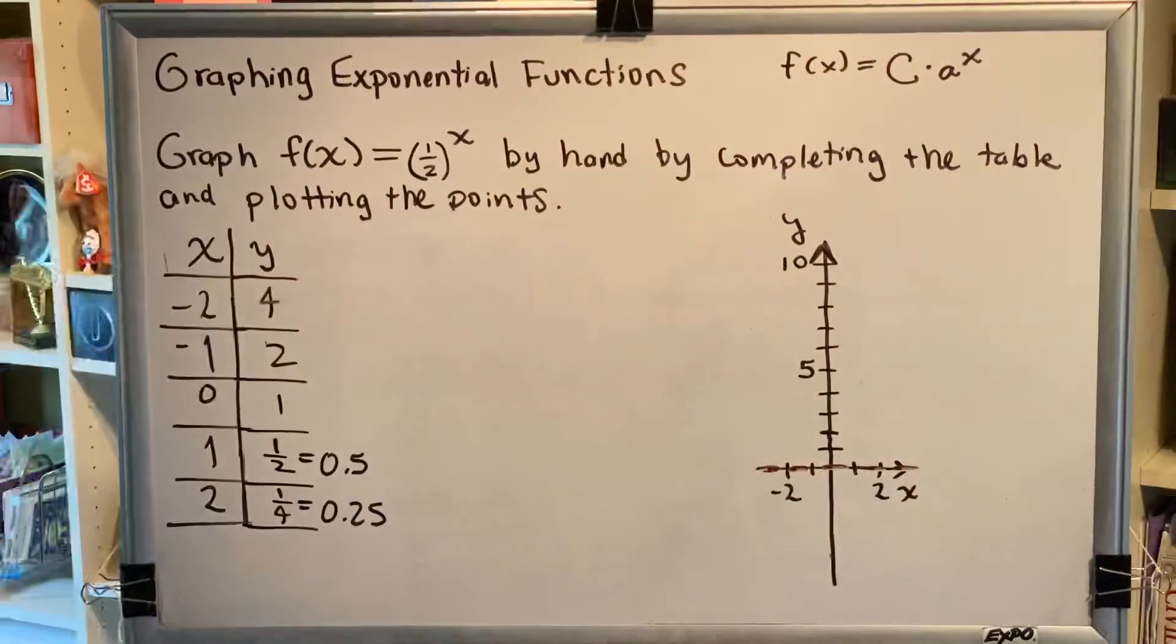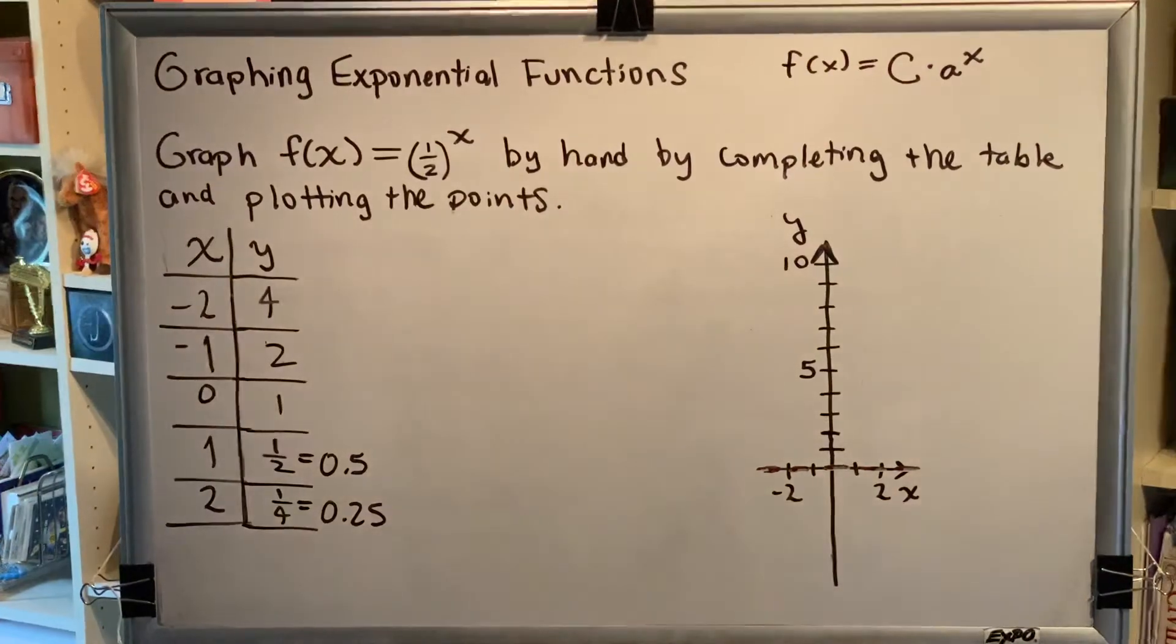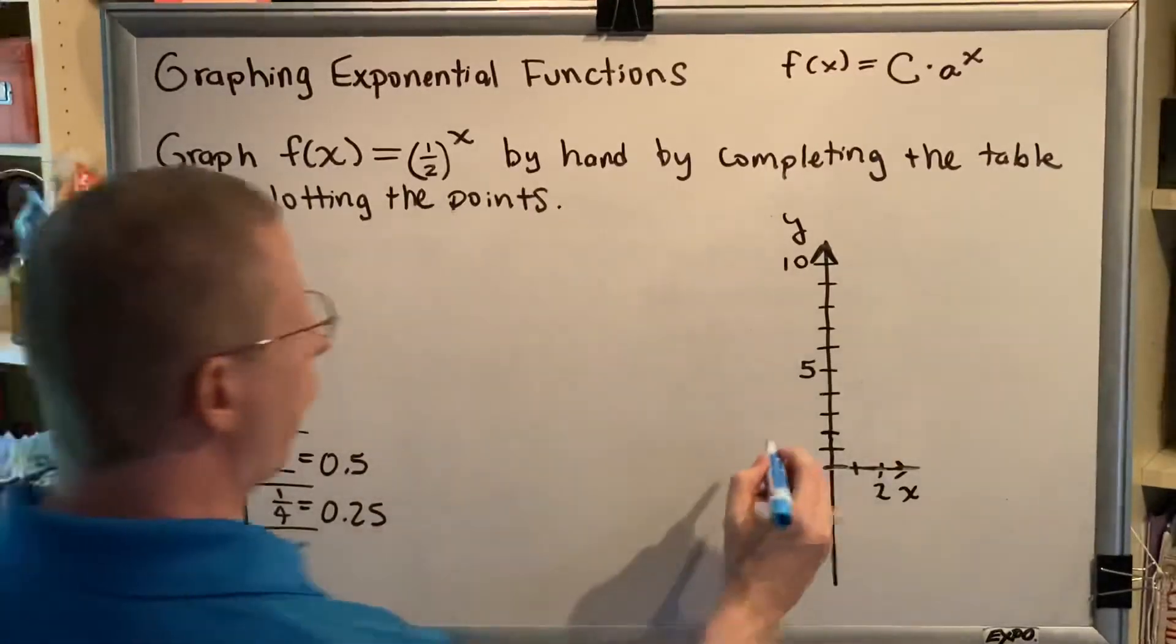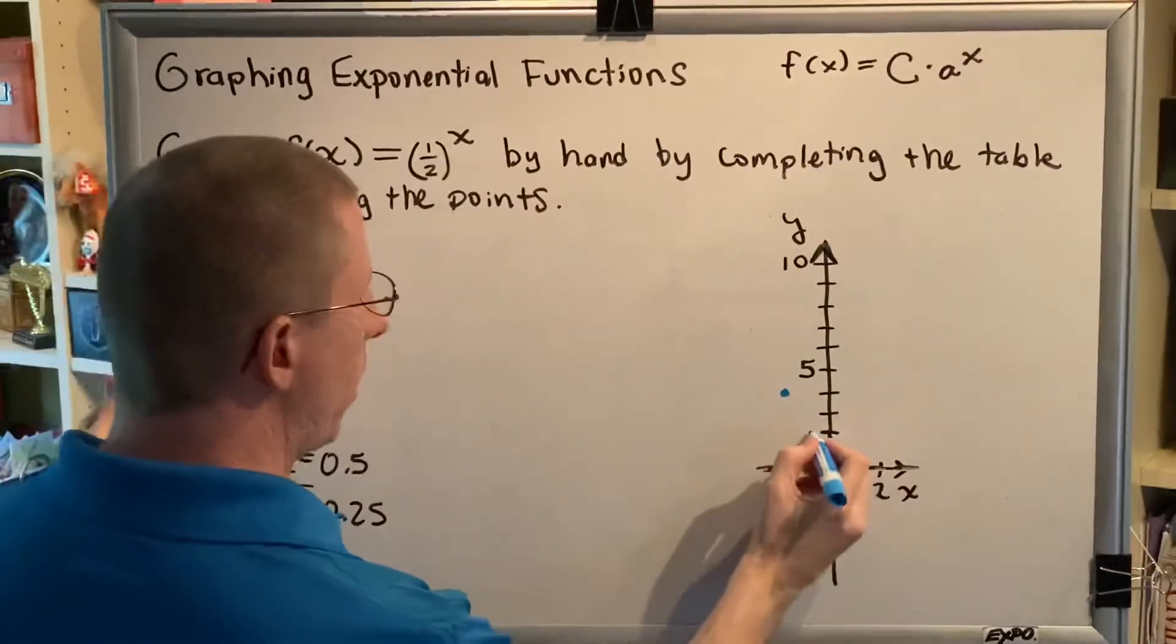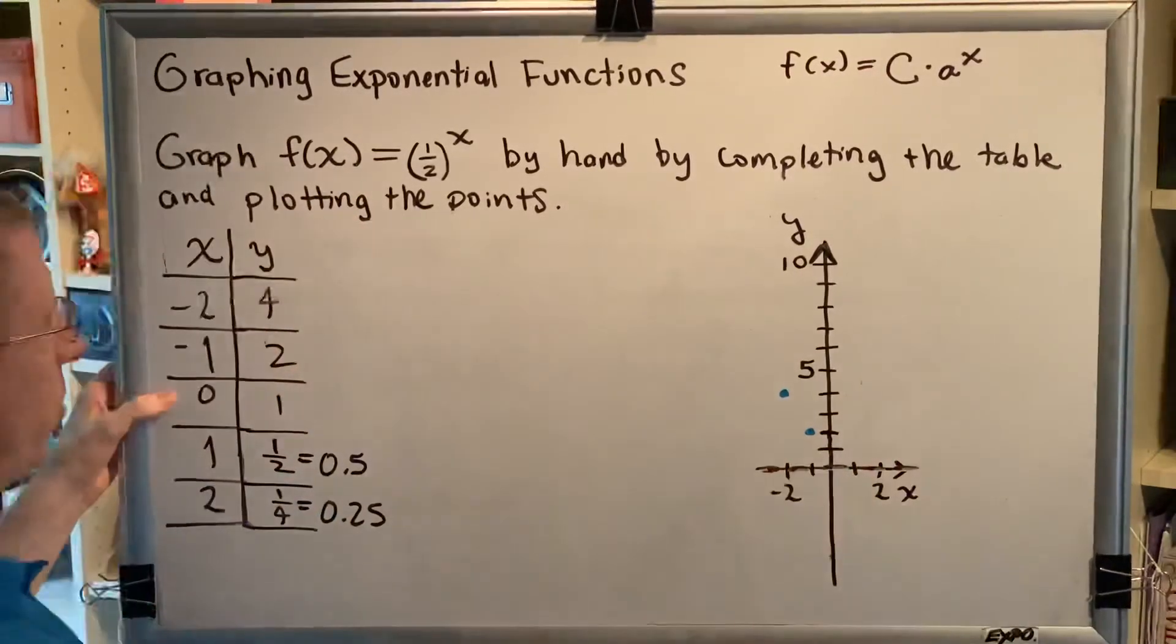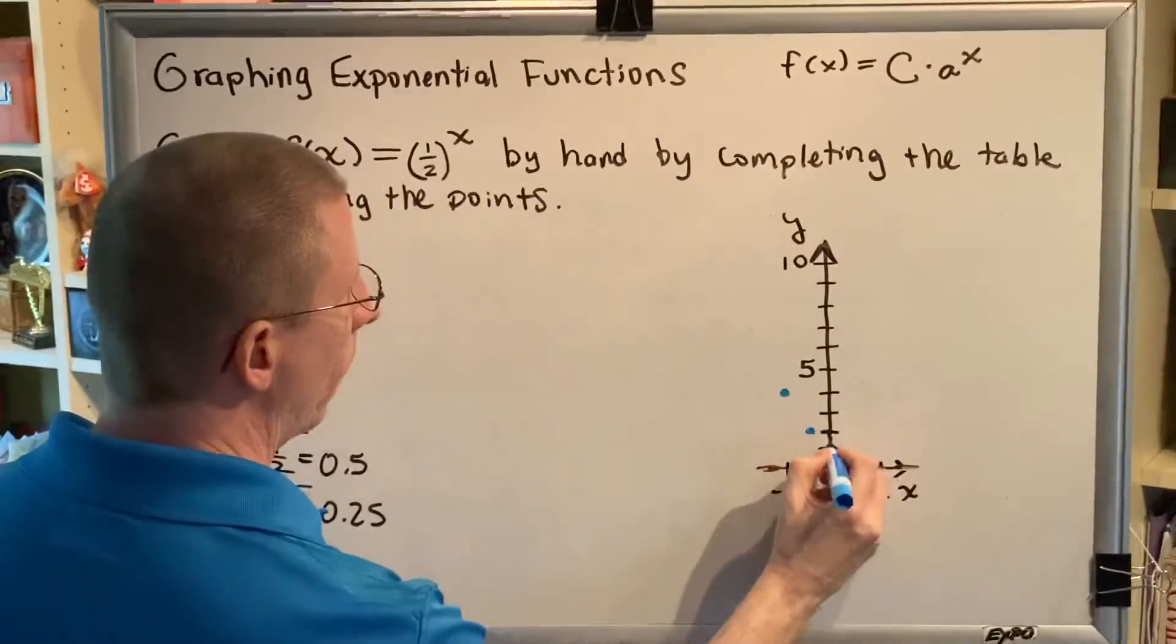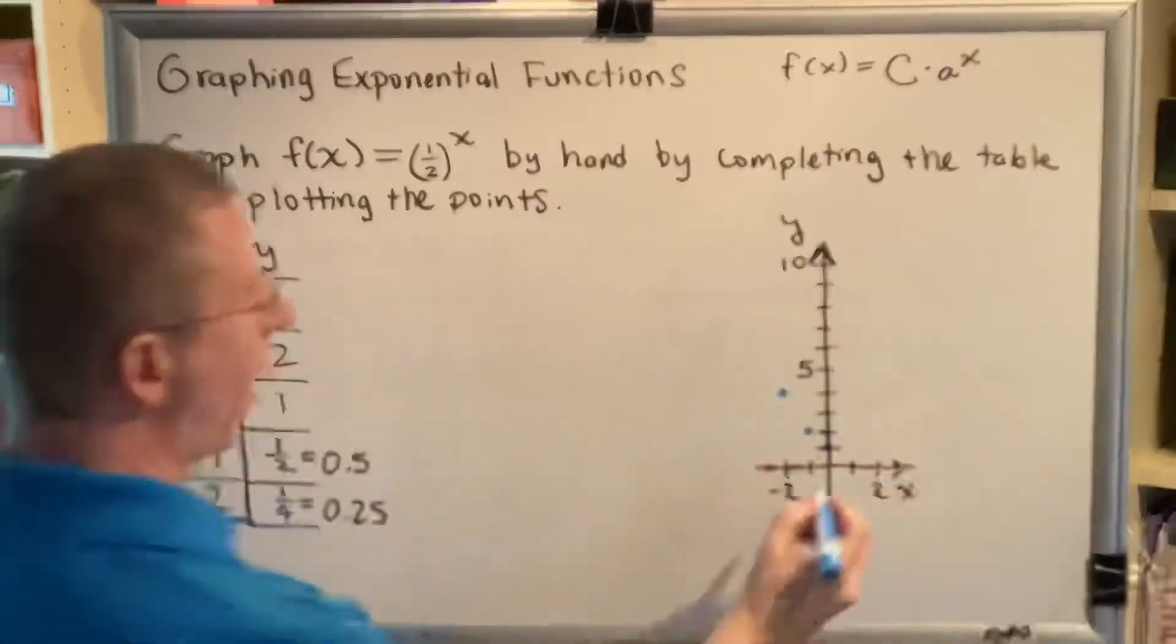We'll plot our five points, and then when we connect them, we'll make sure to approach that asymptote. (-2, 4) would be here. (-1, 2) would be here. (0, 1) would be here.